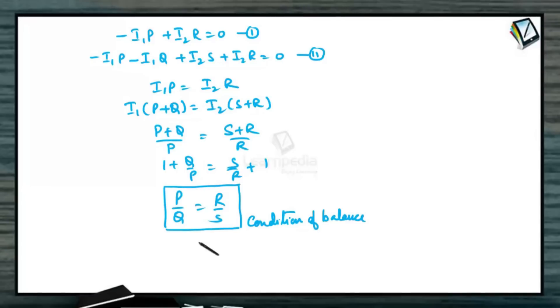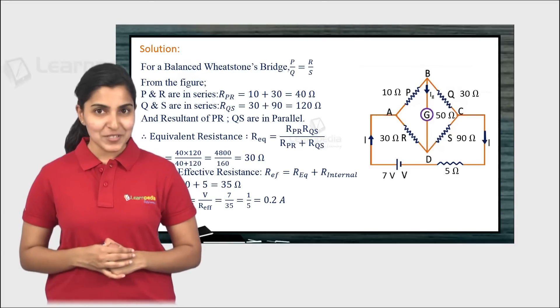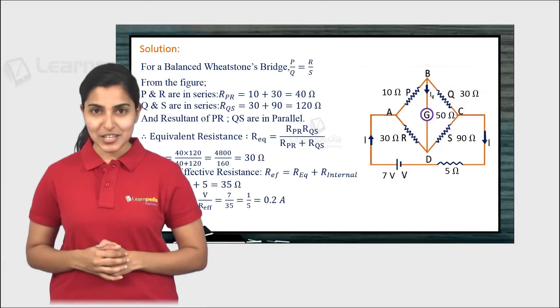Wheatstone bridge condition: potential of point B is equal to potential of point D, current through the galvanometer is 0, and P by Q equals R by S. Hey there, hope you understood the concept. Here's the solution to the question asked at the beginning.